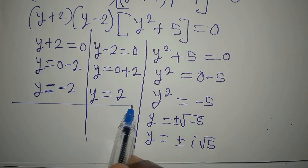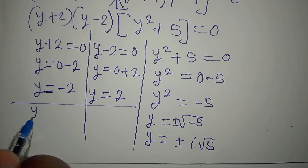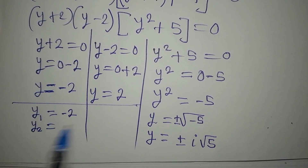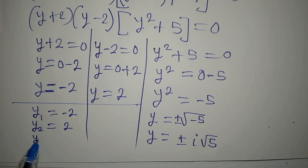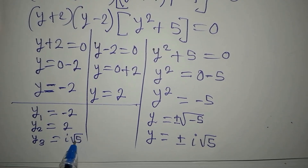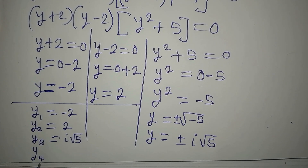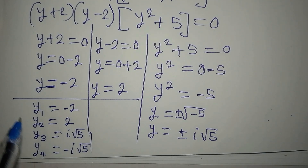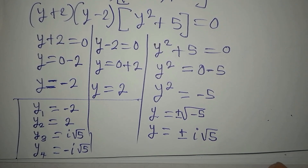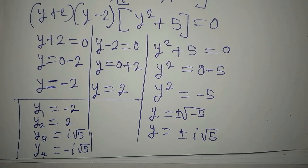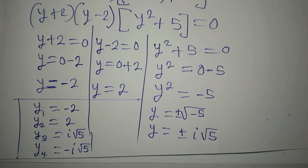Collecting all four solutions: y₁ = −2, y₂ = 2, y₃ = i√5, y₄ = −i√5. These are the four complete solutions. Thank you for watching — if you love the method applied, subscribe to the channel and leave a positive comment. This is Foucault Mathematics.